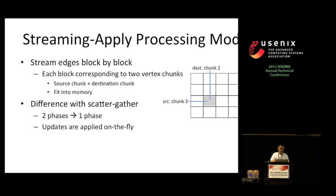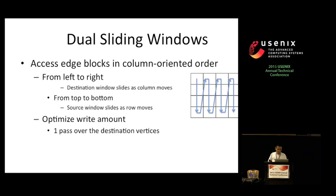We can see that each block corresponds to two chunks of vertex data and we just need to fit them into memory for fast random access. Thus, with the edge grid, we can just stream the edges block by block and apply the on-the-fly updates. Different from the scatter-gather based model, only one phase instead of two is required to do the computation. Next, we will talk about the dual sliding windows. We just said that each block corresponds to two vertex chunks, the source chunk and the destination chunk. Actually, we can view them as two sliding windows. One slides as the row moves and the other slides as the column moves. GridGraph accesses the blocks in column-oriented order which can optimize our write amount to only one pass over the destination vertices. This is a very important feature and requirement from practical use since writes are often considered very expensive and more harmful than reads, especially for SSDs because we will face the wearing out problem.